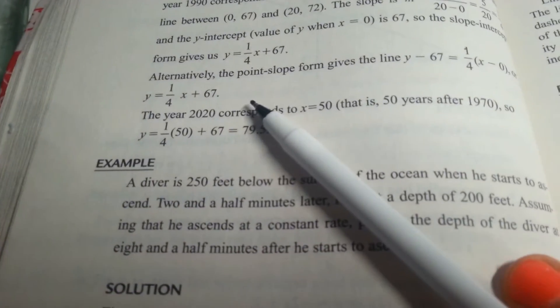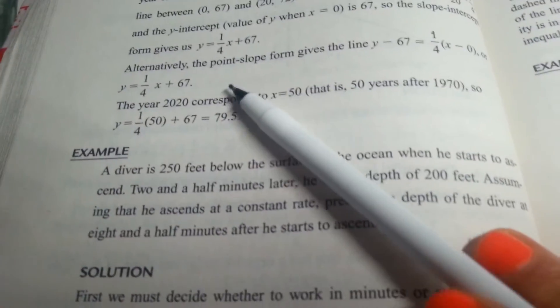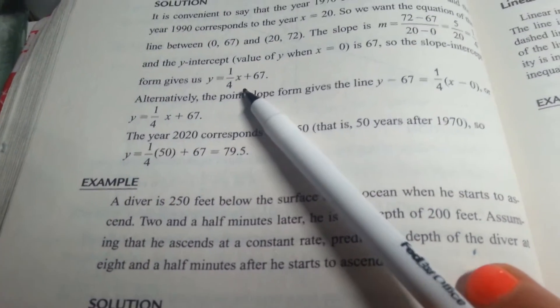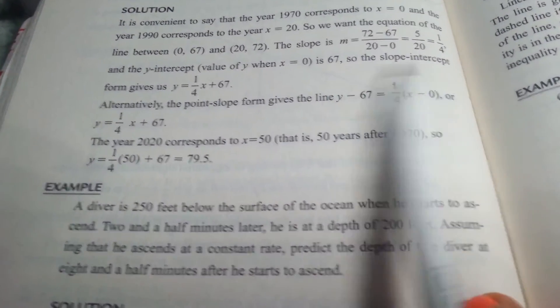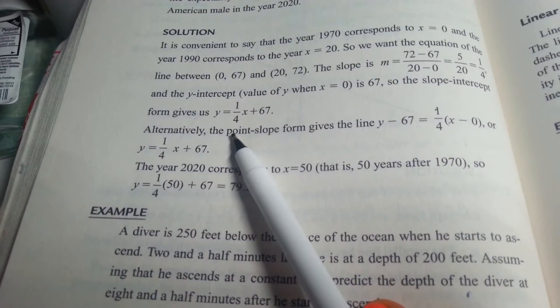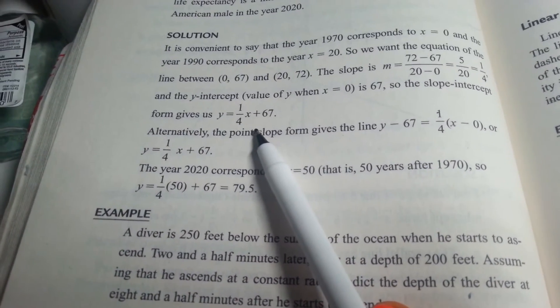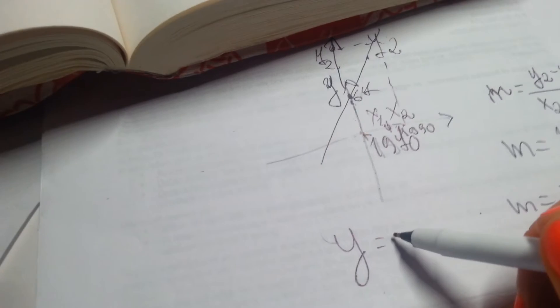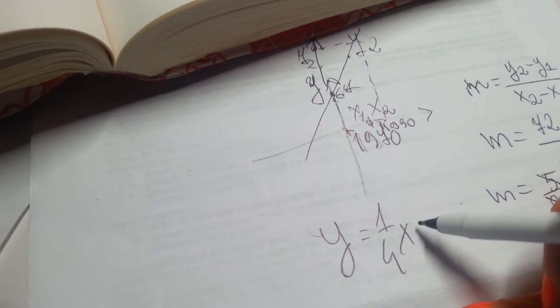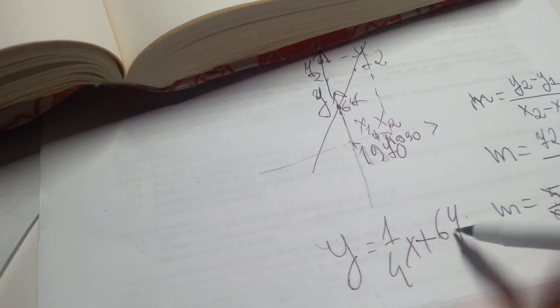Okay, so now we have our slope is 1/4th and we can express our equation as y equals 1/4th x plus 67.